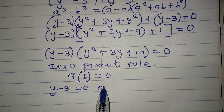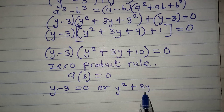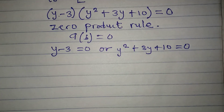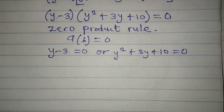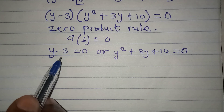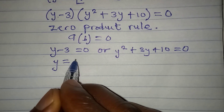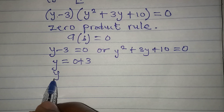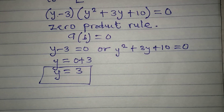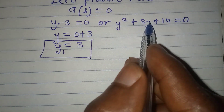So we say y minus 3 equals zero, or the quadratic expression y squared plus 3y plus 10 equals zero. From here we can get three solutions — two from the quadratic equation and one from the linear equation. From the linear equation, y equals 3, and this is y₁.